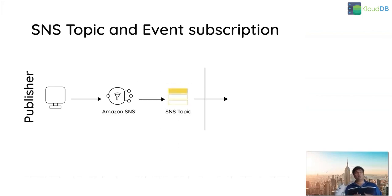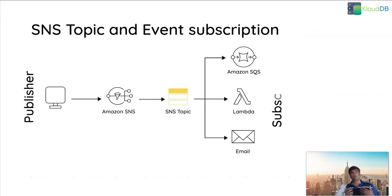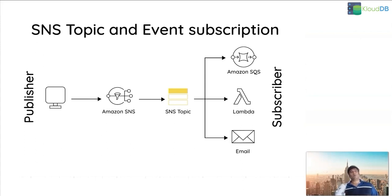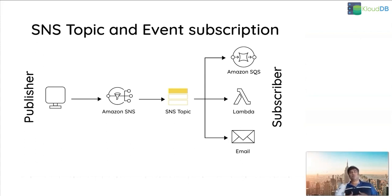Another diagram illustrates the same concept. On the left side, the publisher will be nothing but the events coming through from our RDS. Then we have an SNS topic which will send the messages to Lambda or email. In our demos we'll be using email.